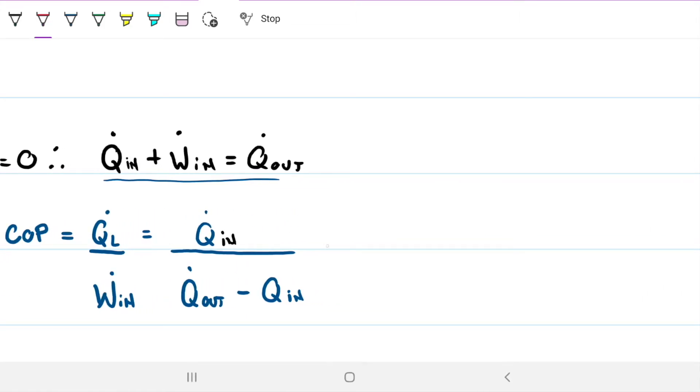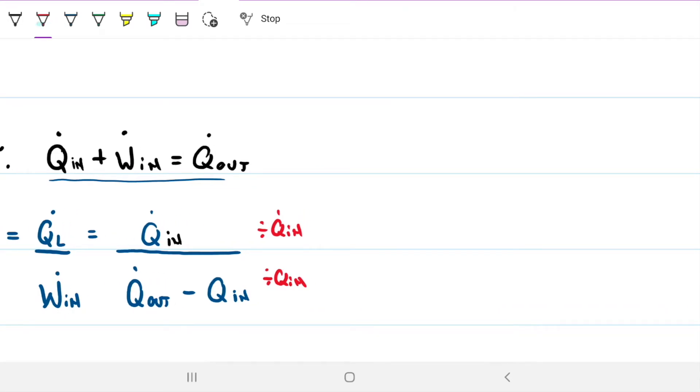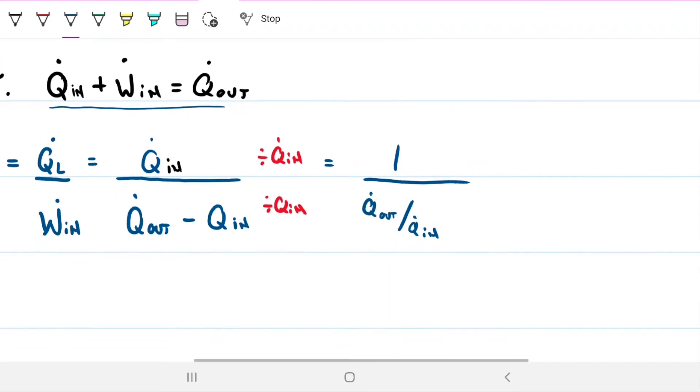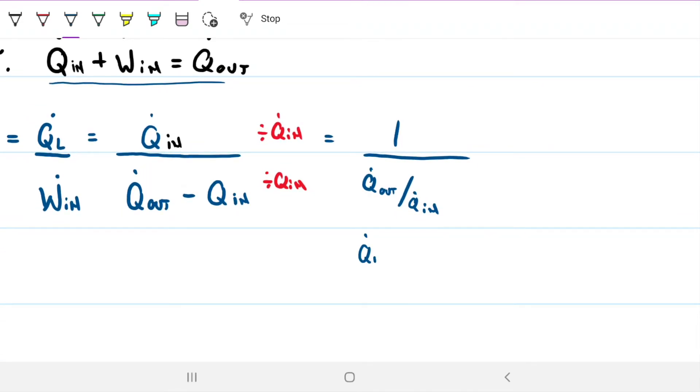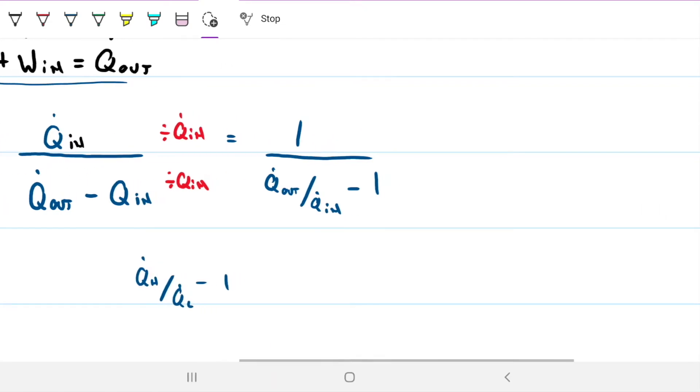And then what I'm going to do here is I'm going to divide both sides by Q_in or Q_L, doesn't matter. We can divide on the upper side and the lower side by this so that we don't alter the equation. And then what happens is that we get one here and over here we get Q_out over Q_in or, in other words, this could also be understood as Q_high divided by Q_low minus one.